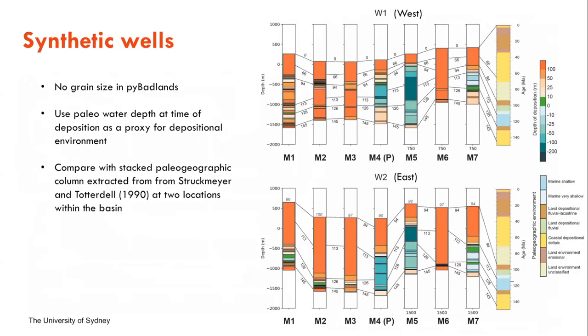I'll try and hurry through these results. What we found most interesting to look at recently is the synthetic wells, where we've tried to extract a proxy for the depositional environment from our Badlands models. There's no grain size that is modeled with Badlands, so instead we use the paleo water depth at the time of deposition. We can compare that between all of our models, and then we've compared that with a stacked paleogeographic column from Struckmeyer and Tottenham. That is where we've stacked the paleogeographies on top of each other, and at a particular location we've extracted at each one million year interval what the depositional environment was.